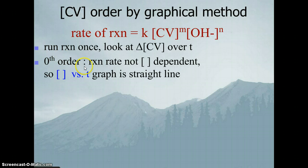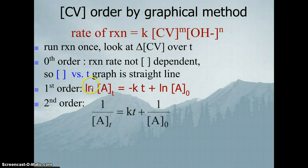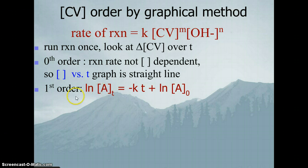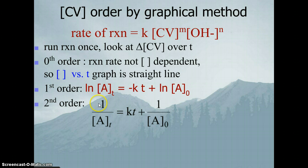From lecture, recall that if it's a 0th order reaction, a graph of concentration versus time will be a straight line. If we graph the ln of concentration versus time and get a straight line, that tells us the reaction is first order in crystal violet. If it's second order, then a graph of 1 over concentration versus time will be linear. So we're looking for which of M = 0, 1, or 2 fits the data.